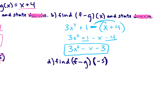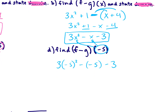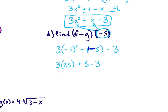Now find f minus g of negative 5 by plugging negative 5 into the x's. So we have 3 times negative 5 squared, minus negative 5, minus 3. Do the exponent first: negative 5 squared is 25. That minus a negative becomes a plus, giving 3 times 25 plus 5 minus 3, which is 75 plus 5 minus 3, equals 77.